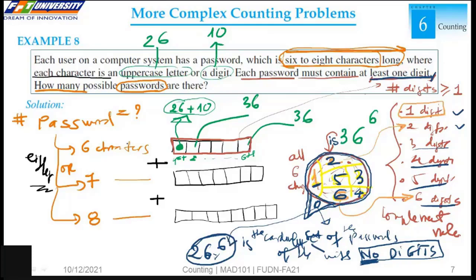For 6 characters, we have 36 to the power of 6 minus 26 to the power of 6. So we have the solution.